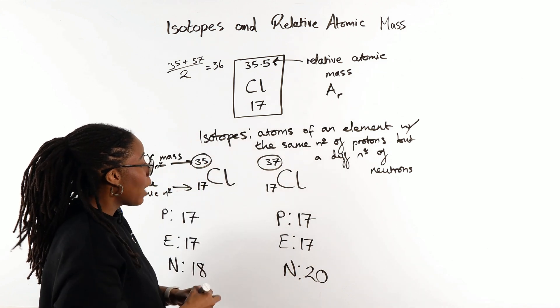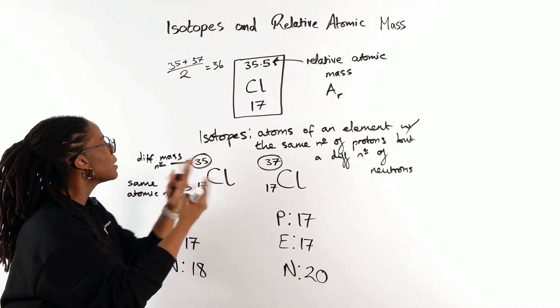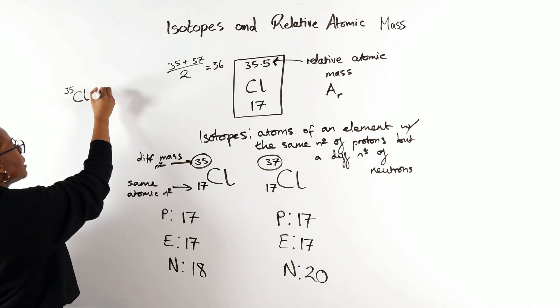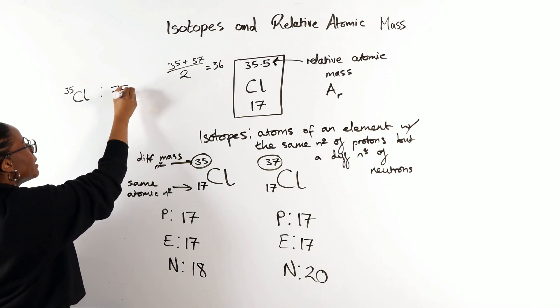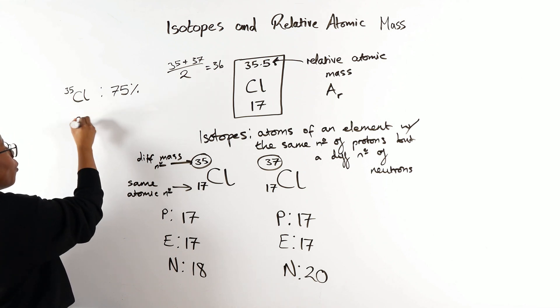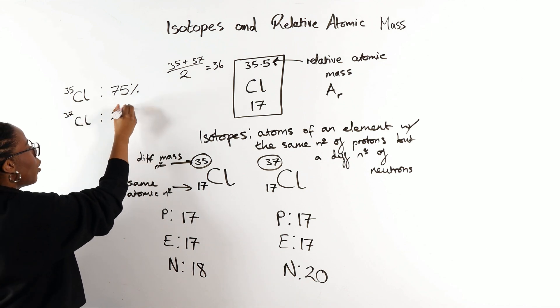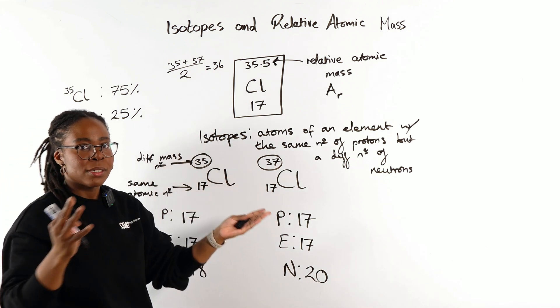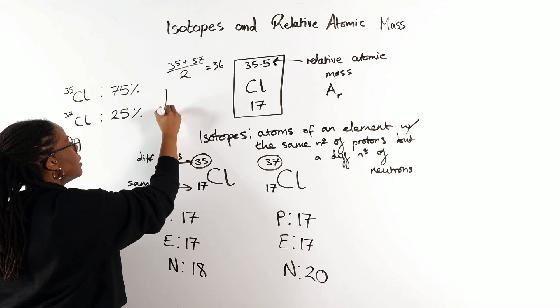So if we take our chlorine, or where should I go? Let's go over here. If we take our chlorine-35, that has a relative abundance of 75%. And therefore our chlorine-37 has got a relative abundance of 25%. If we want to look at that diagrammatically, I like that word.